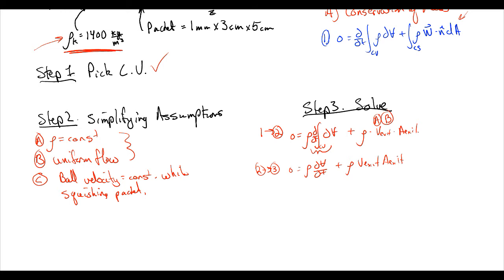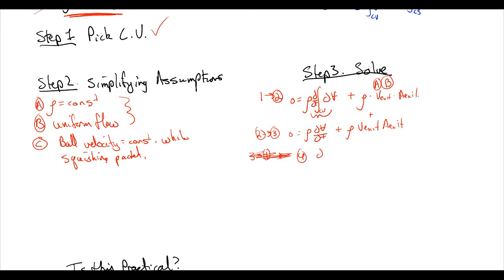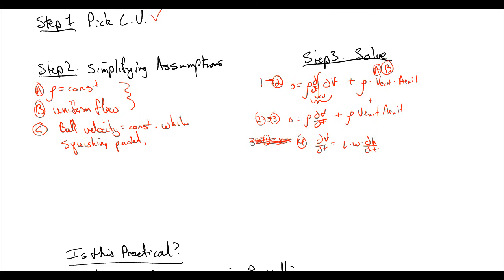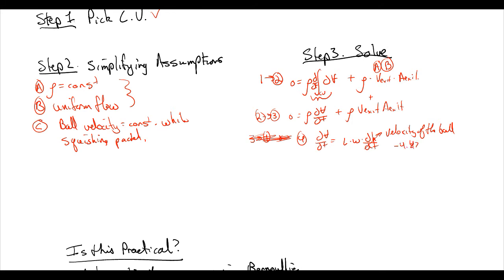Right. We all remember the mnemonic. This volume though, nothing is really changing, but the height. So, three to four, zero is equal to, well, actually let's just write this right now. Let's just say equation four is dv dt is equal to length times width times dh dt. Okay. Where dh dt is actually equal to the velocity of the ball. Okay. Which is equal to negative 4.42 meters per second.